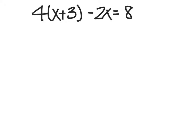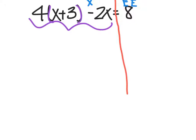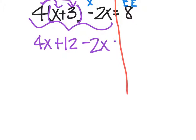For our last problem, we have 4 times the quantity x plus 3, minus 2x, equals 8. We start off the same way: draw our line down the middle and label our sides — x's on one side and everything else on the other. This one has a bit more work because we have multiple x's and parentheses we need to get rid of. So we're going to distribute the 4 in: 4 times x is 4x, 4 times 3 is 12. So I have 4x plus 12 minus 2x equals 8. I can combine my 4x and my minus 2x because they both have x's, and that gives me 2x plus 12 equals 8.